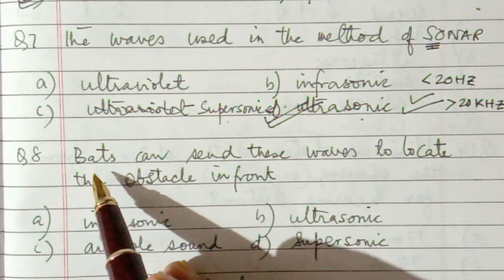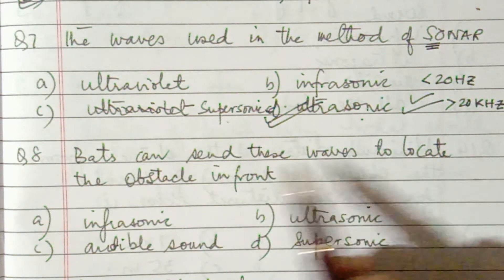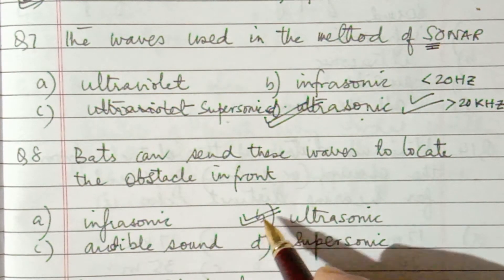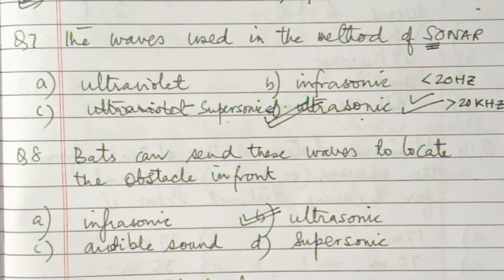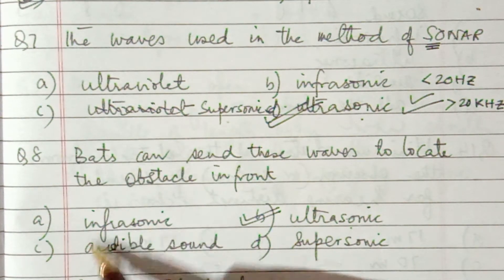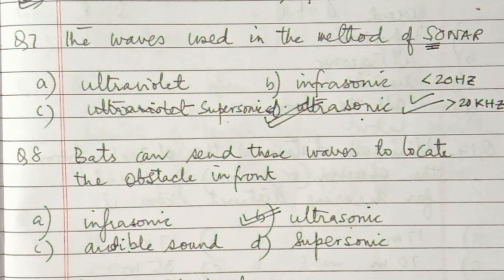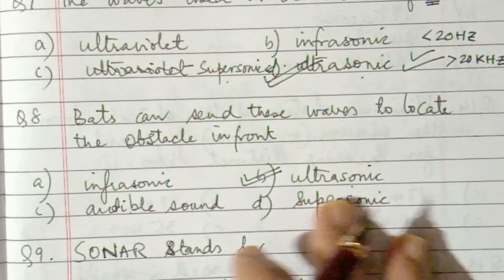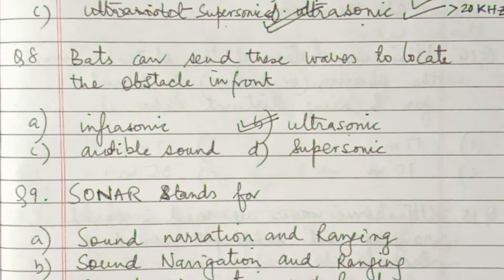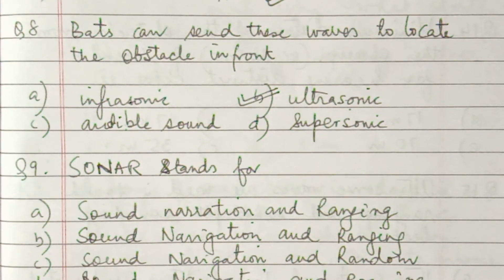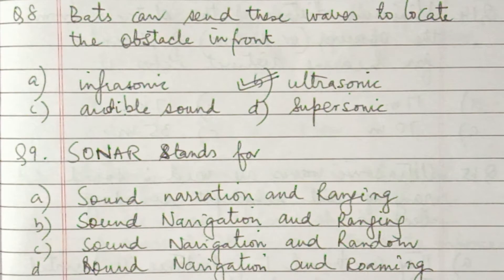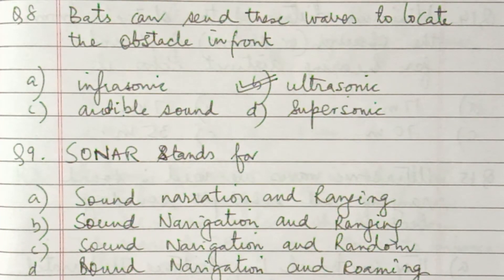Question number 8: bats can send these waves to locate obstacles in front. Bats produce ultrasonic waves. They use the SONAR method — sound ranging using ultrasonic sound. Audible sound and infrasonic are not used. Supersonic is not a sound wave type. Bats produce ultrasonic waves, detect the reflected ultrasonic waves, locate the obstacle, and deviate themselves to avoid colliding with obstacles. This is the method of SONAR used by bats.